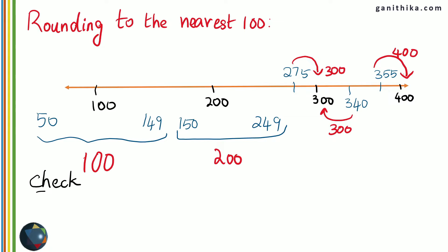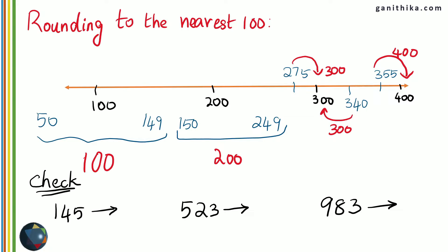Let's check your understanding now. Try to answer these questions by rounding them off to the nearest 100. 145 is less than 149 and closer to 100, therefore this will be rounded off to 100. 523 is above 500 but less than 549, therefore it is closer to 500 than to 600 — so it is rounded off to 500. 983 is above 950 and less than 1049, therefore it will be rounded off to 1000. So 983 is rounded off to 1000 when rounding to the nearest 100.